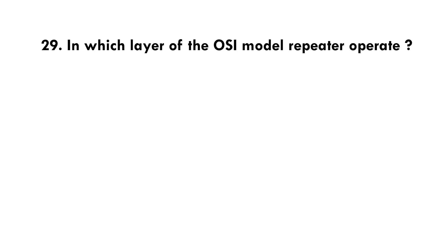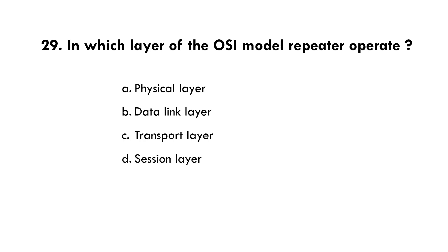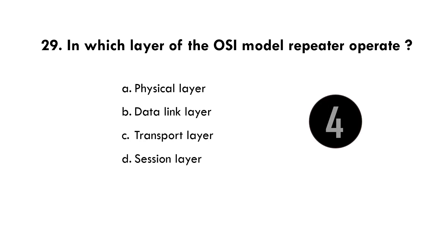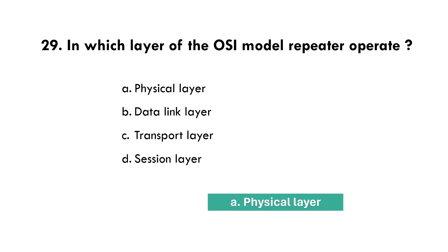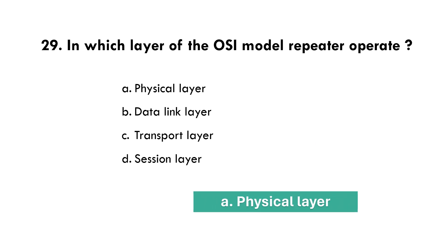In which layer of the OSI model does a repeater operate? — Option A: Physical Layer.